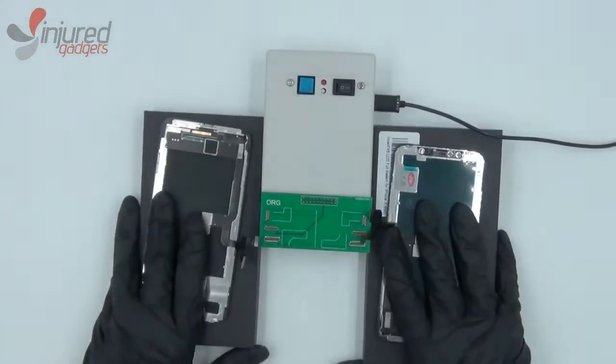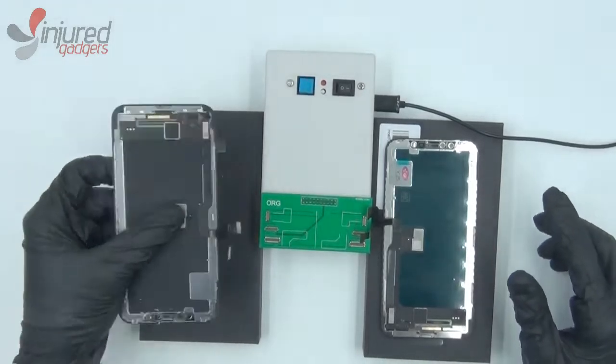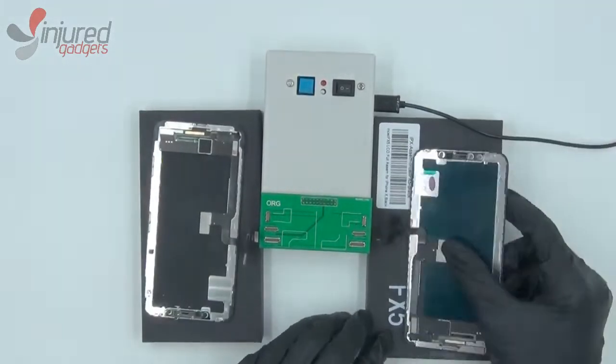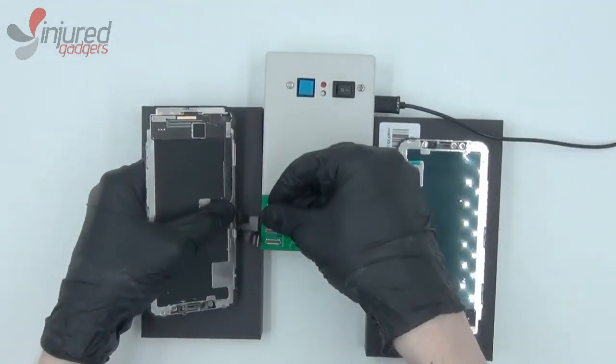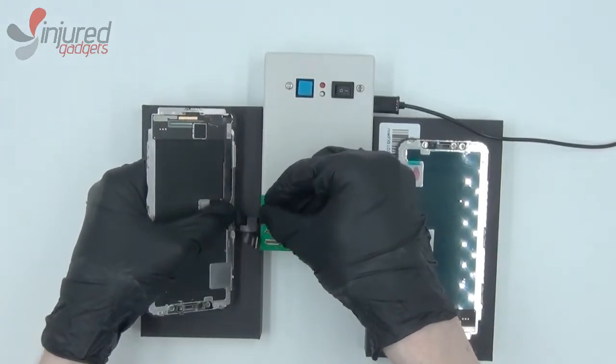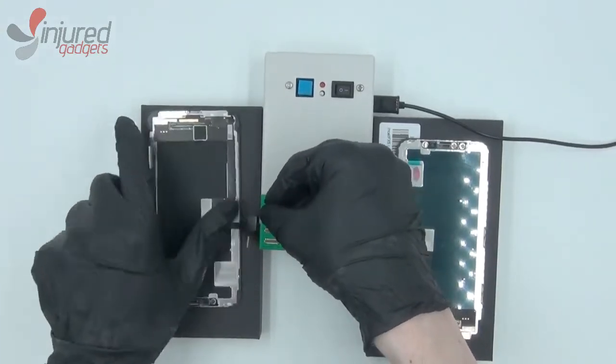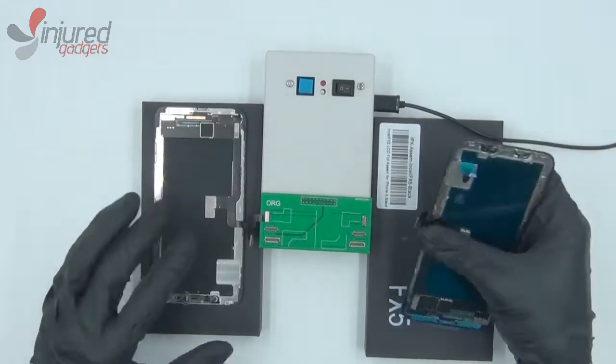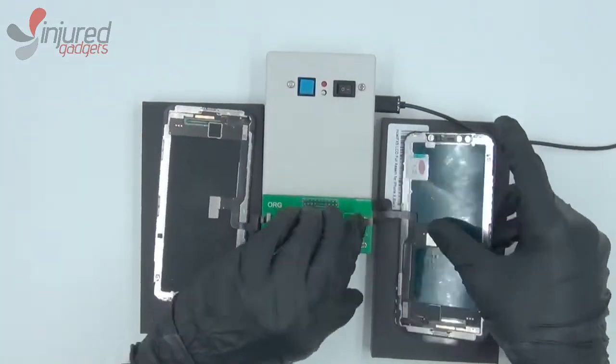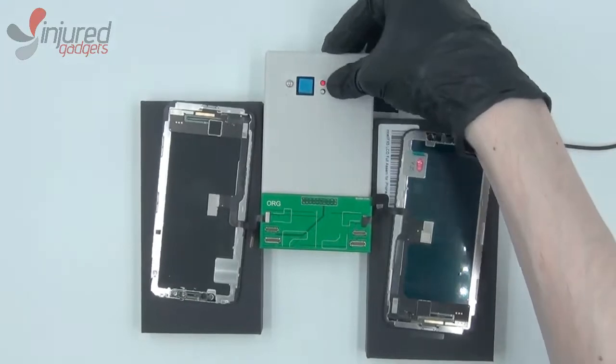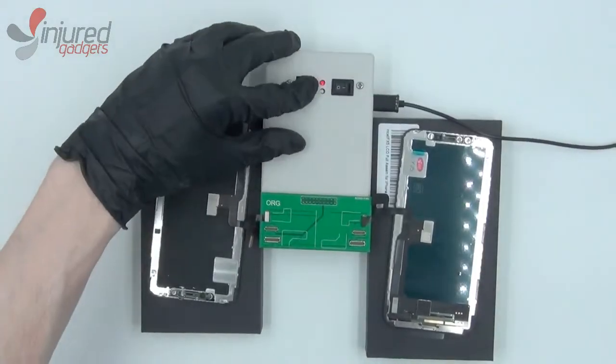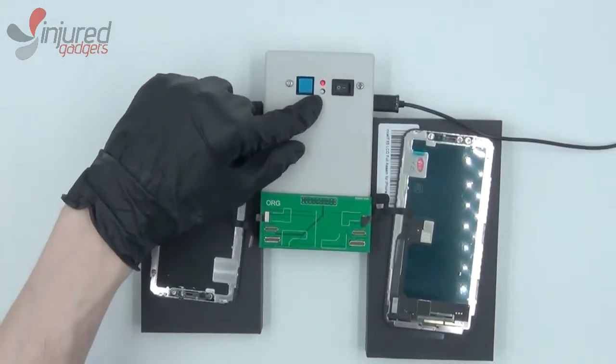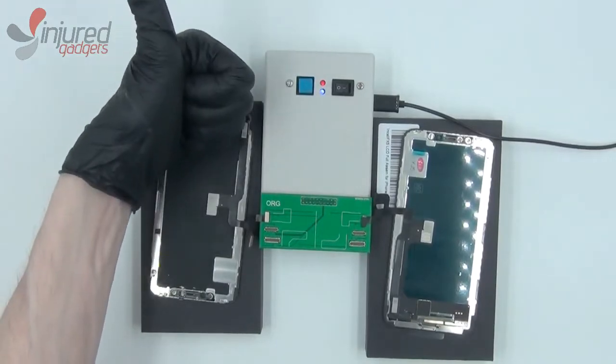Now we'll start off by demonstrating iPhone X. We have an OEM screen on the left and our FX5 screen on the right. So we'll start by plugging in our OEM screen. Now we can plug in our replacement screen. Now we'll power on the box, hit the read write button, and wait for a blue indicator light to indicate success.